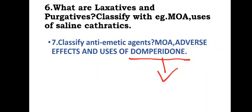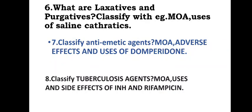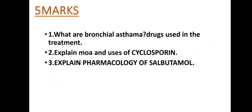Anti-emetic drugs directly suppress the trigger zones present in the brain, decreasing the activity of those trigger zones — that is their anti-emetic activity. Next question: Classify antituberculosis agents and write the mechanism of action, uses, and side effects of INH and rifampicin.